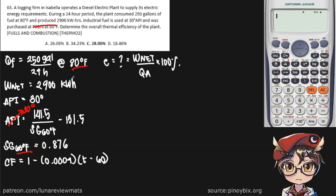Our temperature is 80 degrees Fahrenheit. And we should get a correction factor of 0.992. And to get our specific gravity at 80 degrees F, we simply multiply the correction factor by the specific gravity at 60 degrees Fahrenheit. And that should give us 0.869 as our specific gravity at 80 degrees F.